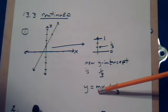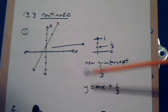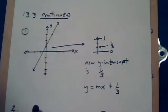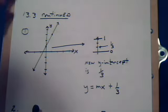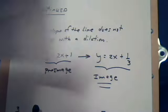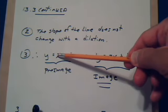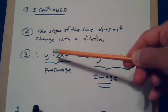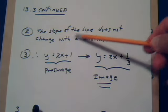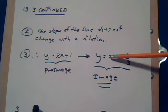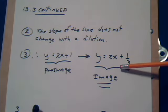This is the new y-intercept. We still need to find the M, but the M is easy. When you have a dilation, the M doesn't change. So you just copy it from the original line, in this case the pre-image, which was 2. This is the pre-image slope. You just copy it over, and here's the image line.